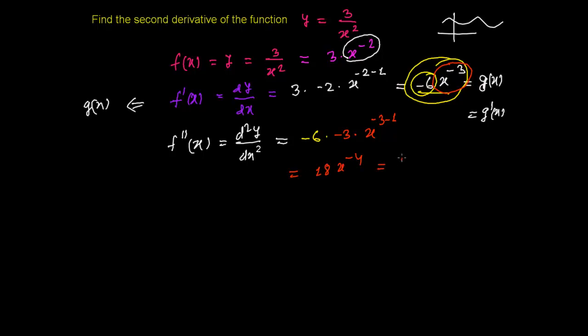This is my g prime of x. And what is this g prime of x actually? Yes, this g prime of x means f double prime of x, which means this g prime of x is the derivative of the function, and that function is itself a derivative of one function which is y, which is f of x.